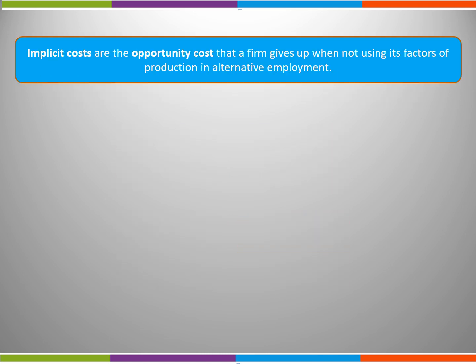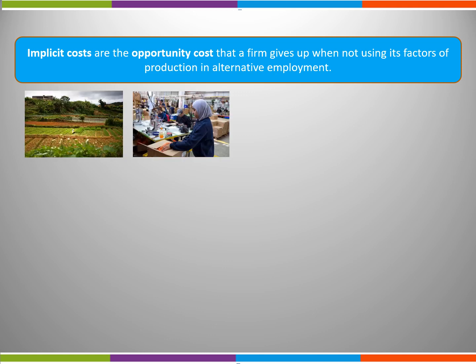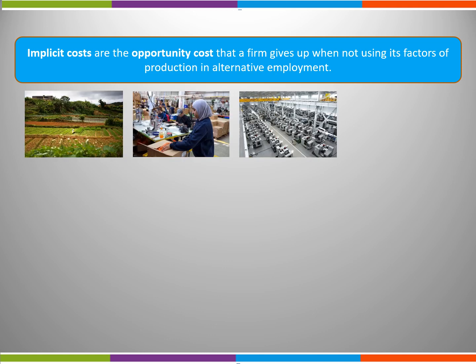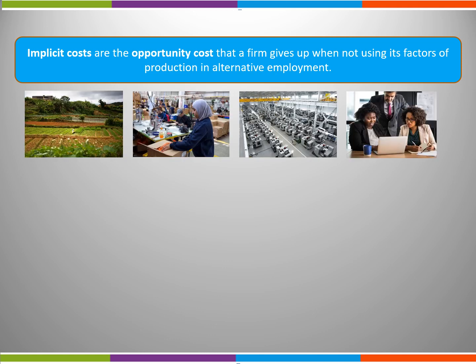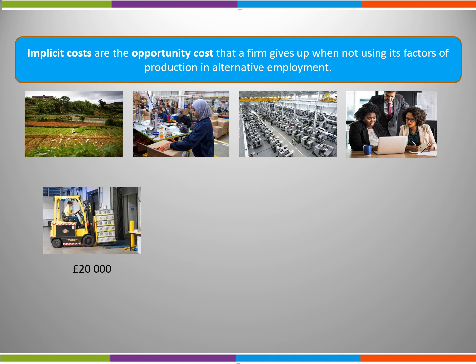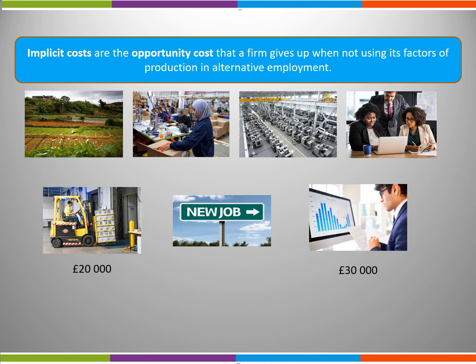Implicit costs are the opportunity cost that a firm gives up when not using its factors of production in alternative employment. For example, if I gave up a job earning £20,000 and took on a new job earning £30,000, the opportunity cost, or implicit cost, would be the £20,000 that I was giving up.